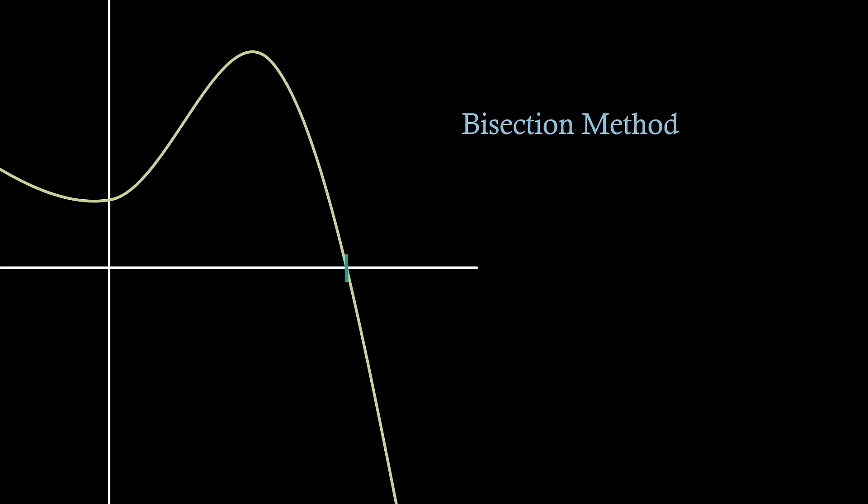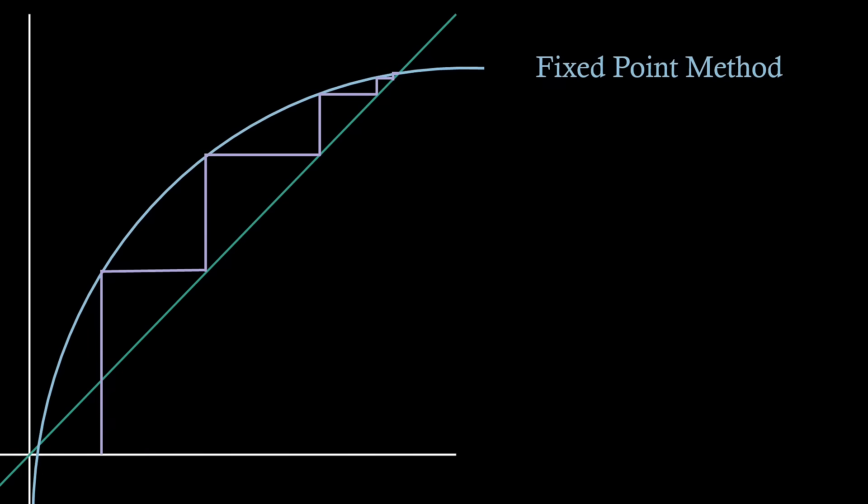Leading on from this, for the fixed point iteration method, we need to figure out what causes this to converge. To do this, we need to define an error term of the scheme at each step, and then figure out what we need to do to make this error term shrink, and hence converge to the root.